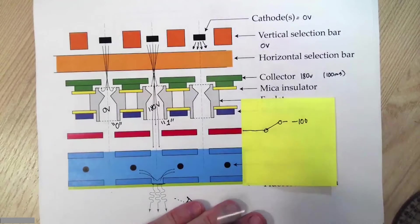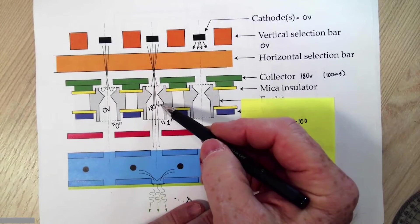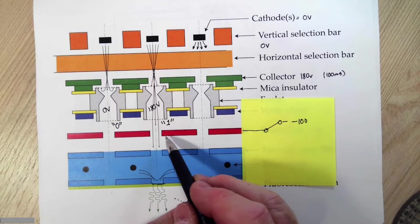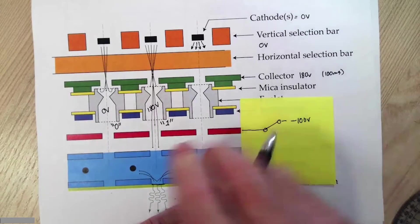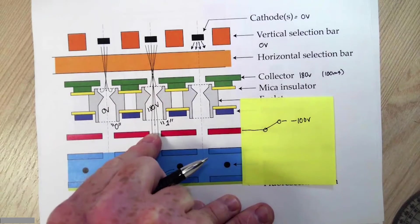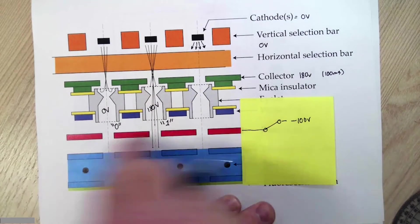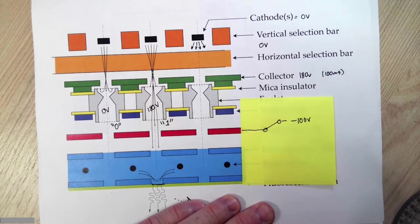So even if I have a high bit here, if my read plate is this negative, minus 100 volts, I will not get this current coming through. This read plate acts a lot like the grid in a triode.